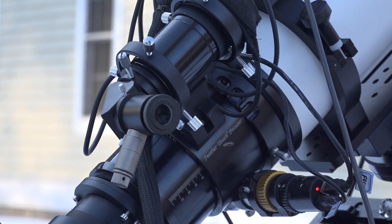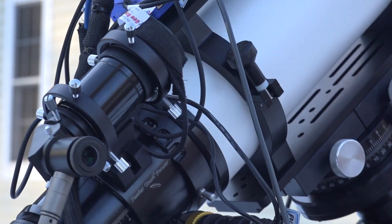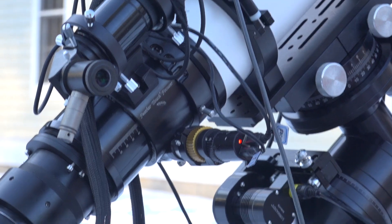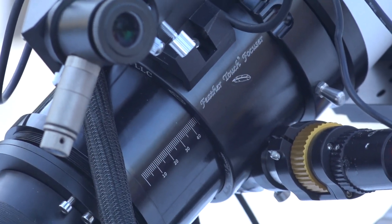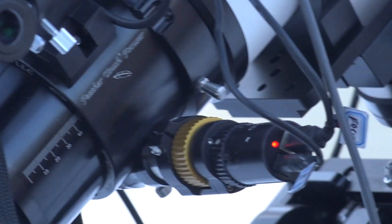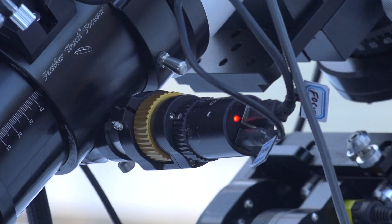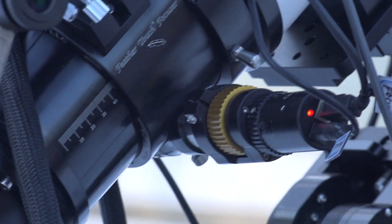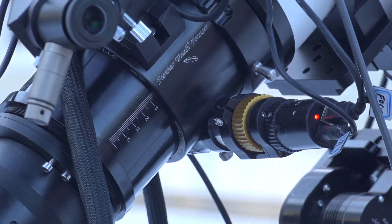Behind that is my Feather Touch focuser, which is a 3.5-inch focuser, and I modified it with this powered focus motor. I can use that to either autofocus or to step through focus steps during the night without actually touching the telescope and causing vibrations.